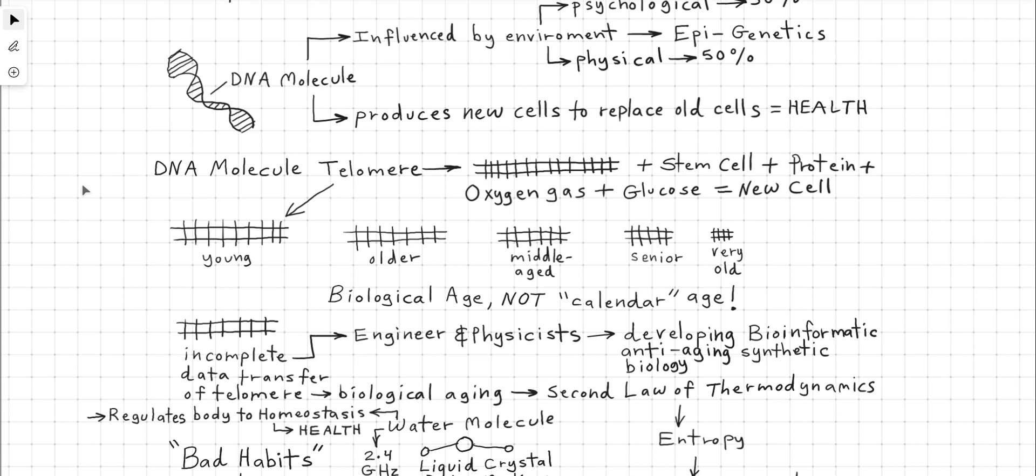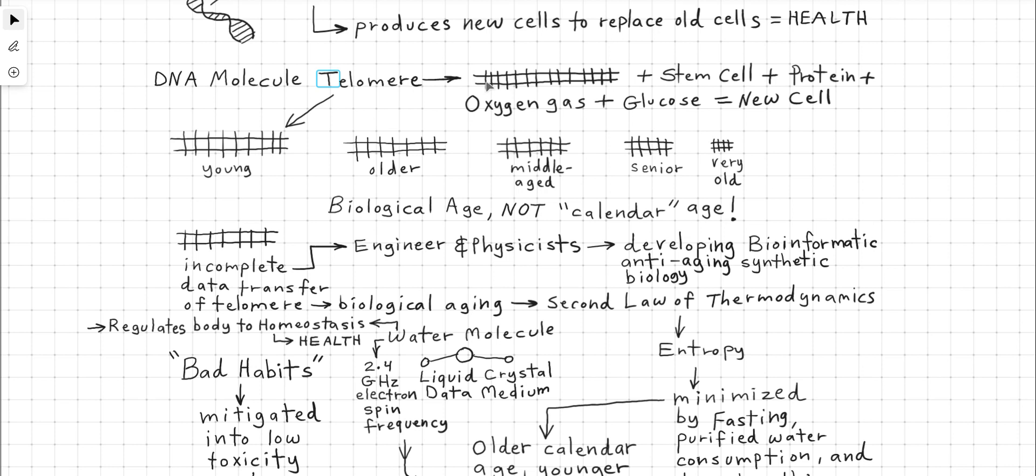Coming to the end of this lecture, we have the DNA molecule telomere, which looks like a railroad track when examined and these telomeres plus the stem cell plus protein plus oxygen gas plus glucose will yield a new cell. Aging is when the telomeres get shorter and shorter and shorter. This is predicated on biological age, not calendar age. For example, somebody might have a calendar age of 50 years old, but their biological age might be 35 and vice versa. You might have people who are 40 and they have a biological age of 52, 55. This is due to the toxins that build up in the body, both physical and psychological toxins. People might have a negative attitude and they might be physically toxic. Then they have more DNA damage, more DNA information lost.